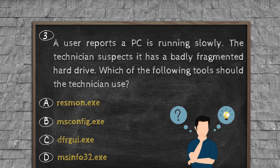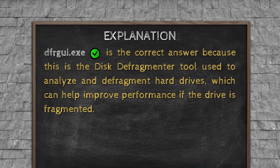Question number three. A user reports a PC is running slowly. The technician suspects it has a badly fragmented hard drive. Which of the following tools should the technician use? Option A, RESMON. Option B, MSCONFIG. Option C, Defrag. Option D, wininfo32.